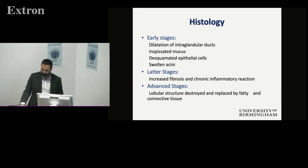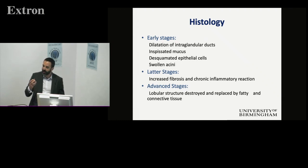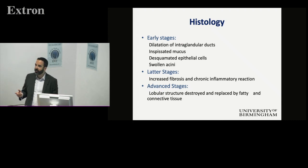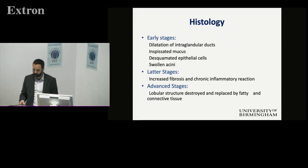Histologically — this isn't something you really need to go into other than maybe for an MCQ — it occurs in different stages. In early phases you get dilatation of the ducts, mucus trapped and stranded, epithelial cells shed, and acini swollen. Then you start getting fibrosis and chronic inflammation, and finally replacement by fatty tissue, scarring tissue, and connective tissue.